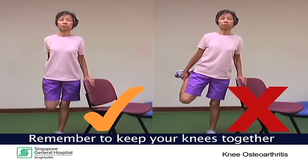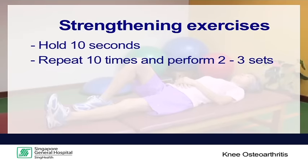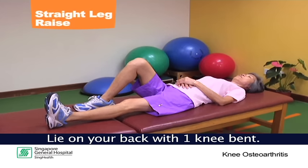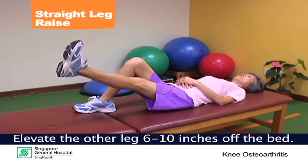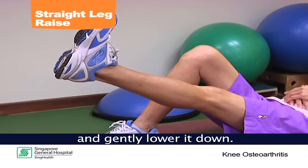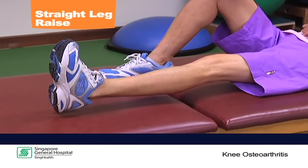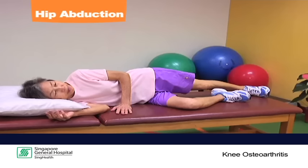Remember to keep your knees together when doing the stretch. Strengthening exercises: hold for 10 seconds, repeat 10 times, and perform two to three sets. Straight leg raise: lie on your back with one knee bent, elevate the other leg 6 to 10 inches off the bed, hold the position for 10 seconds and gently lower it down.